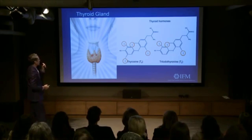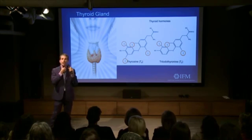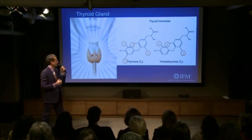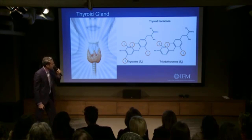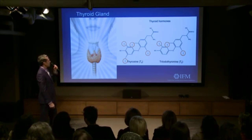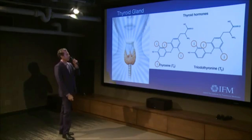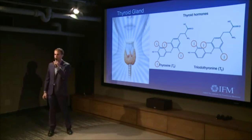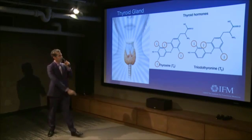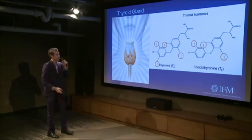The thyroid gland is about two-thirds of the way down from the jaw, right here under the Adam's apple for the men. There are two main types of thyroid hormone: T4 and T3. You can see that the iodine molecules are about the same, except that in T3, an iodine has been removed from one of the locations on the ring.